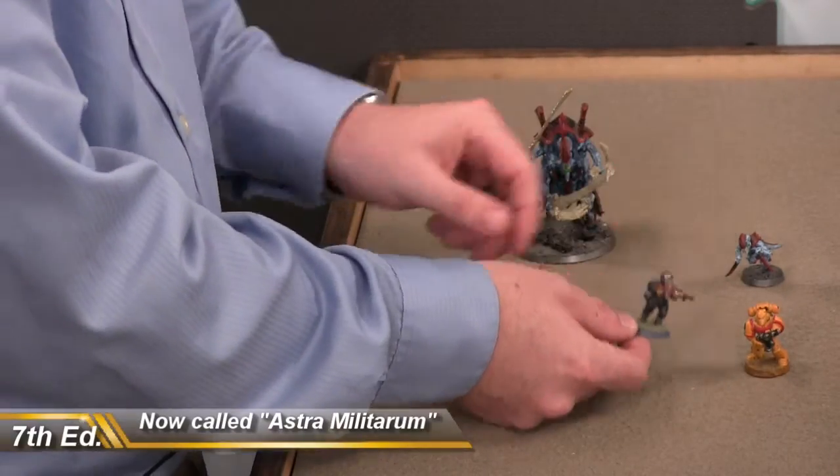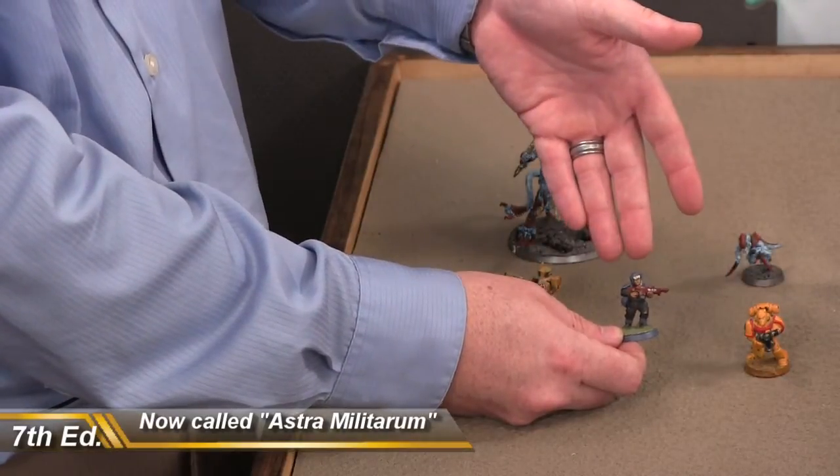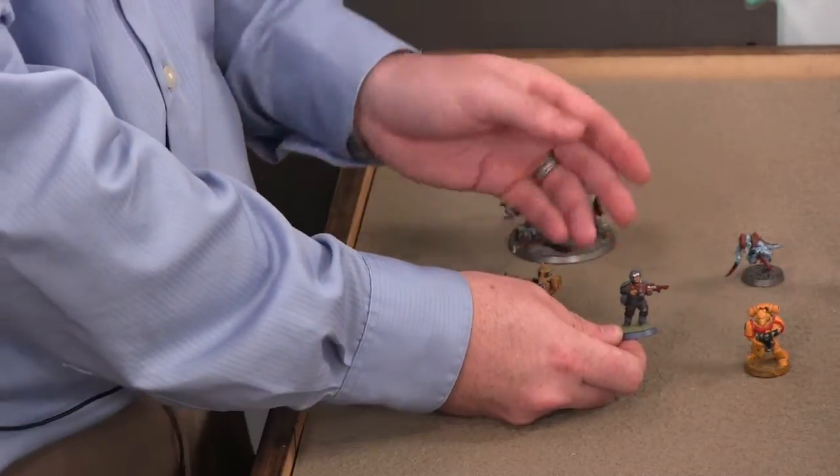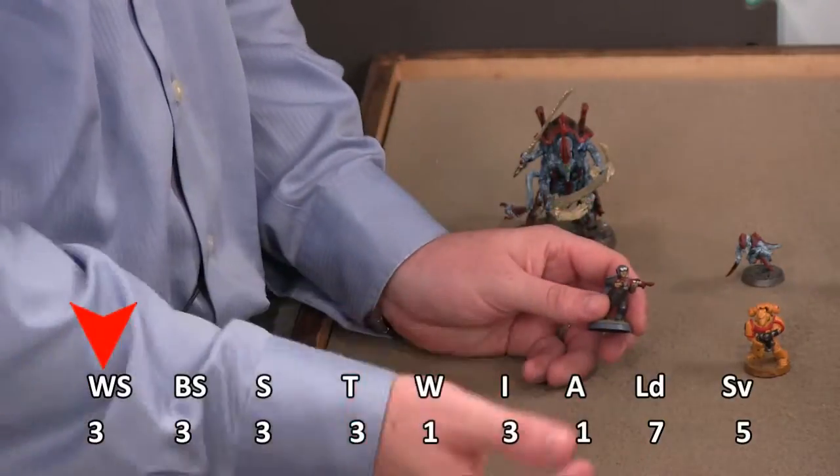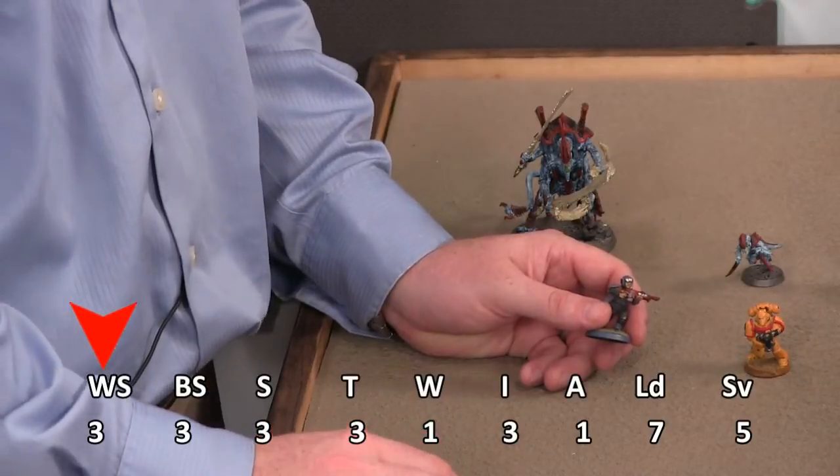I've got next to him an Imperial Guard. Superhuman soldier of the 41st century. Non-superhuman soldier of the 41st century. So let's see how his stats stack up. And here they are. You've got a weapon skill of three. Less than a space marine. All of them one. Ballistic skill three.